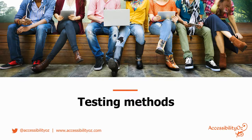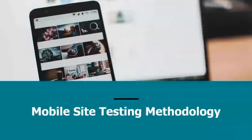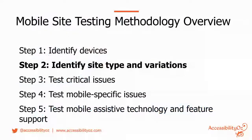The first thing we determined was the testing methods. We decided there were four main testing methods: one was devices — testing on mobile and tablet devices; secondly, testing devices with assistive technologies; third was responsive windows — testing on a responsively-sized window on desktop; and fourth, testing on desktop. Notice there are no simulators and no automated testing tools — simulators are not good enough, and the testing tools available aren't robust enough to rely on at the moment.